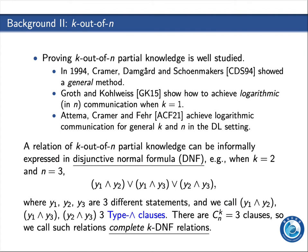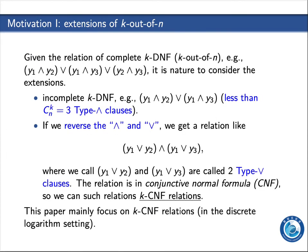Sigma protocols for proving K-out-of-M partial knowledge are well studied. A relation of K-out-of-M partial knowledge can be informally expressed in disjunctive normal form, and we call it complete KDF relations, since the number of crosses is the binomial coefficient K-out-of-M. It is natural to consider extensions of complete KDF relations.